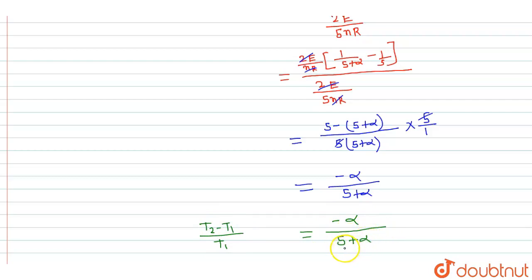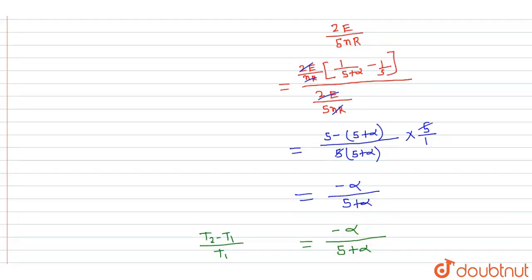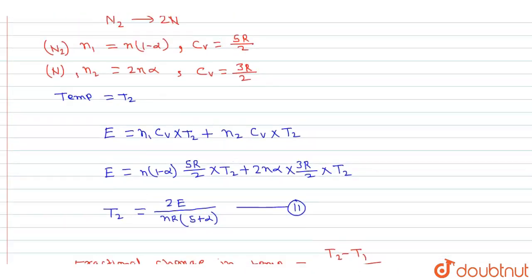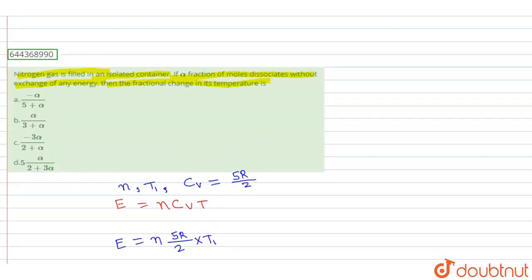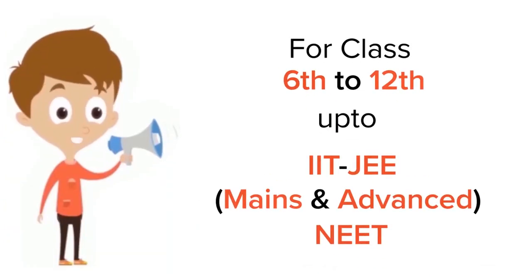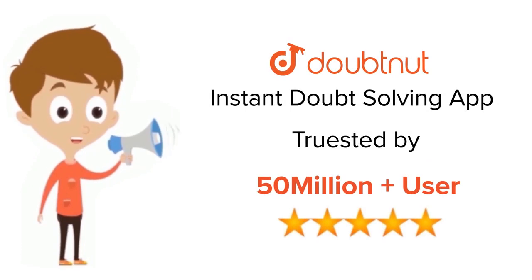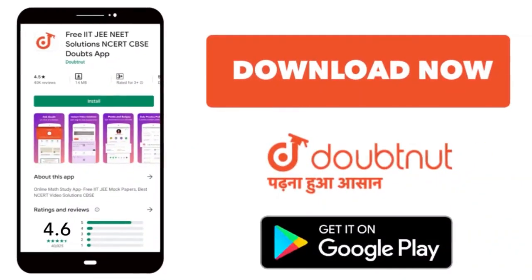So the fractional change in temperature is -α/(5 + α), which corresponds to option A. Hope this answered your question. Thank you. For class 6 to 12th, IIT JEE and NEET level, trusted by more than 5 crore students — download the Doubtnut app today.